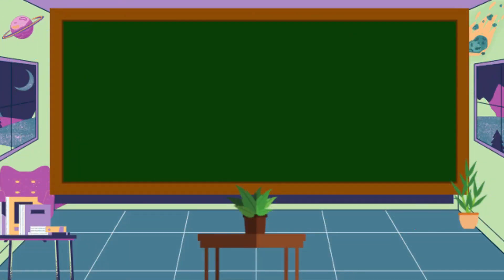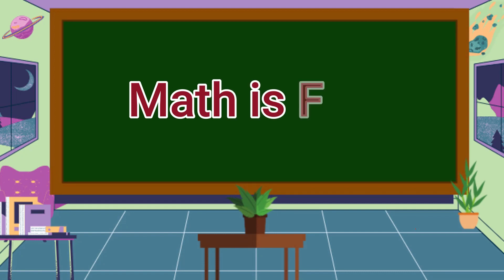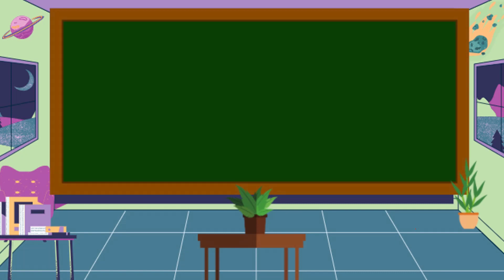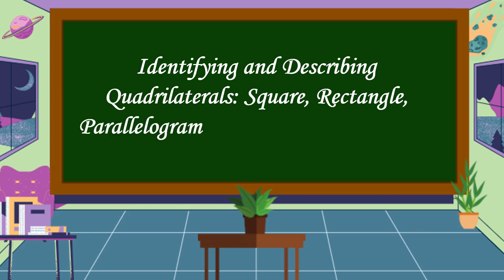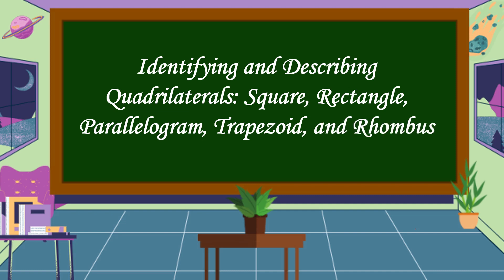Hello everyone, welcome to Masked is Fine. Our lesson for today is all about identifying and describing quadrilaterals: square, rectangle, parallelogram, trapezoid, and rhombus.